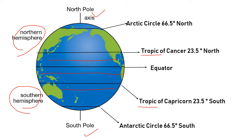The Arctic Circle is the line of latitude that circles the globe at approximately 66.5 degrees north of the equator. The Arctic also helps circulate ocean currents, moving cold and warm water around the globe.